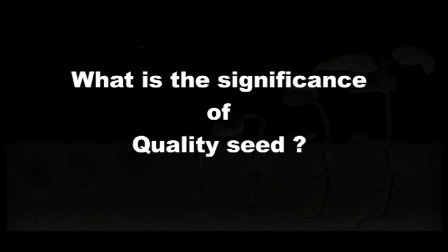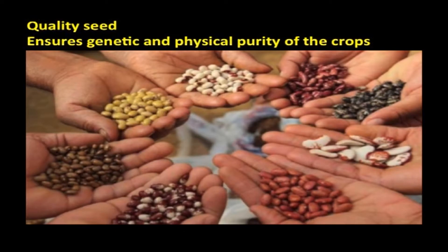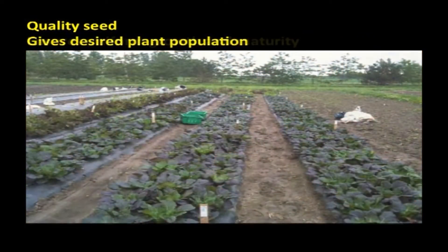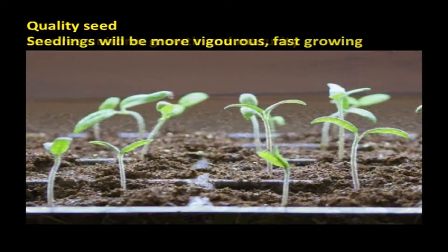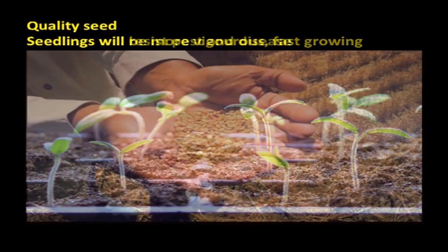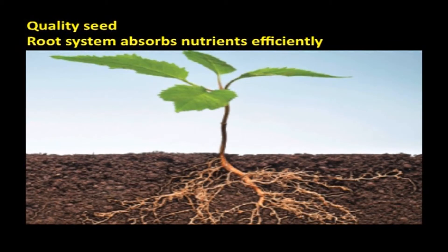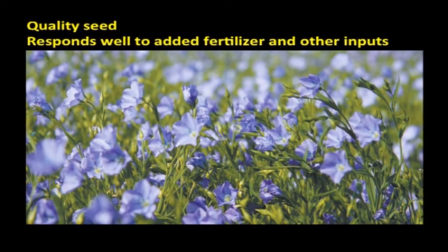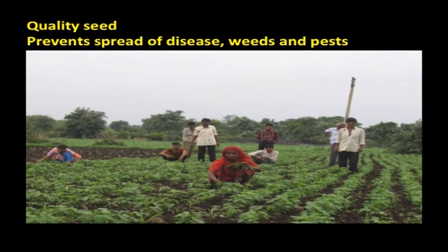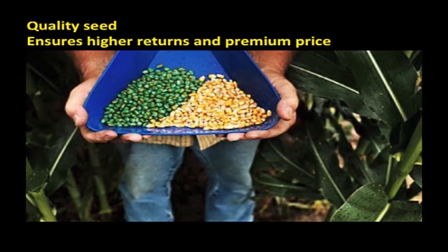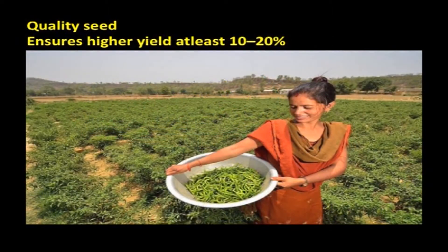What is the significance of quality seeds? Quality seeds will provide various benefits: they ensure genetic and physical purity of crops, give desired plant population, ensure uniform growth and maturity. Seedlings produced will be vigorous, fast growing, and resistant to pests and diseases. They will possess the capacity to withstand adverse conditions, promote development of a root system more efficient in absorbing nutrients, and result in higher yield. They will respond well to added fertilizer and other inputs, prevent spread of diseases, weeds, and pests, and ensure higher returns at premium price. Good quality seeds of improved varieties will always ensure higher yield by at least 10 to 20 percent.